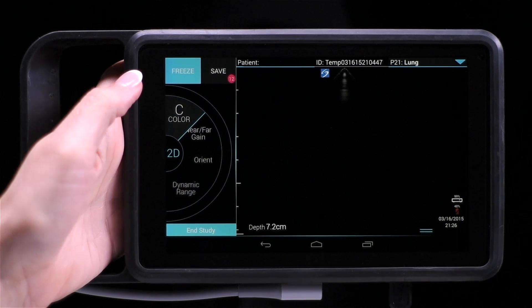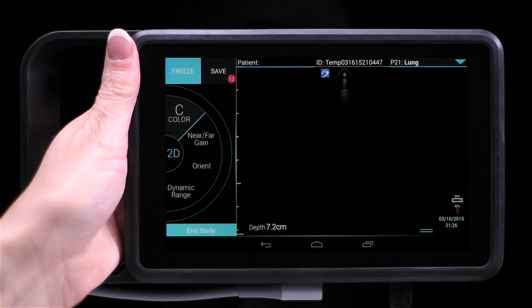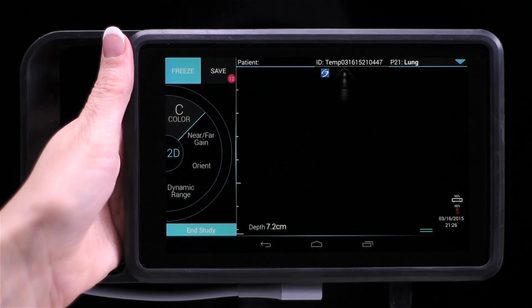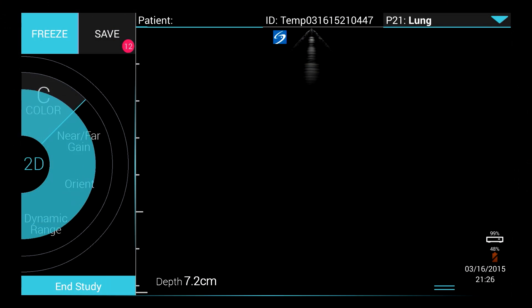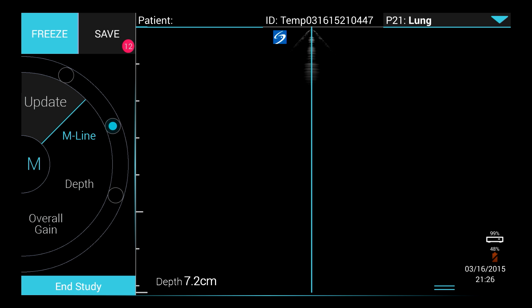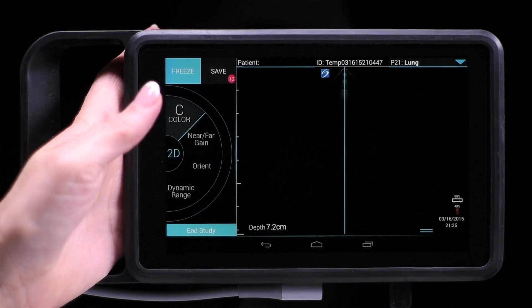There are two Press and Hold modes in iViz. To switch between 2D and M mode, just press and hold the 2D button. Then press and hold the M button to return to 2D.